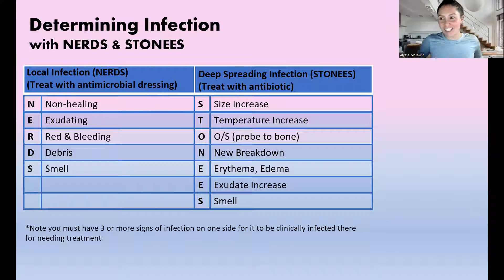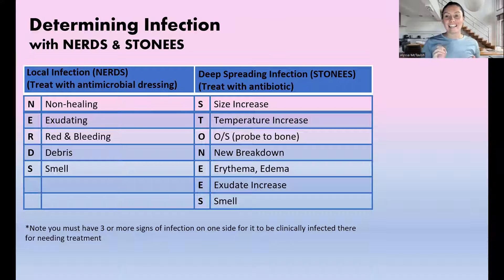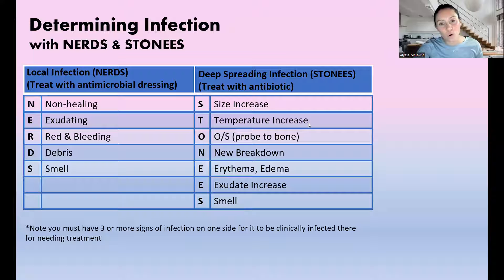Let's get started with this chart: determining infection with NERDS and STONEES. NERDS is for local infection — we treat it with an antimicrobial or antibacterial, topically. Anytime we're using this chart, we're going to check off the symptoms we're seeing. We need three symptoms on either side of the chart to say it's clinically infected. For the NERDS side — local infection — we have: Non-healing, Increased exudate, Red bleeding friable tissue, Debris such as slough or necrotic tissue, and Smell or odor.